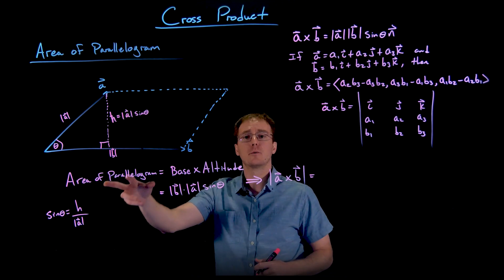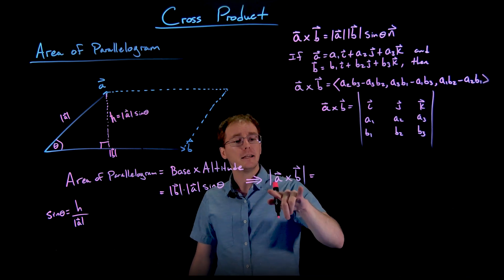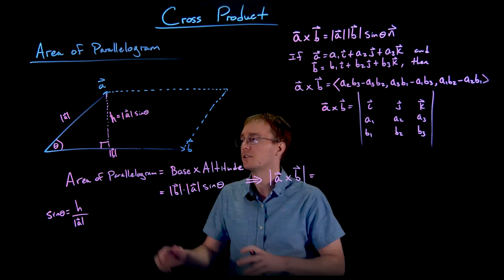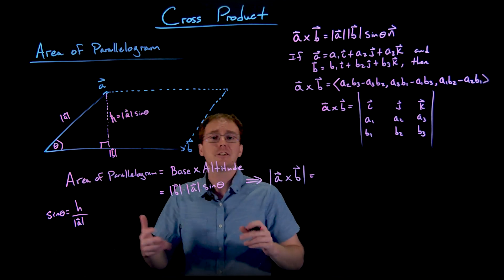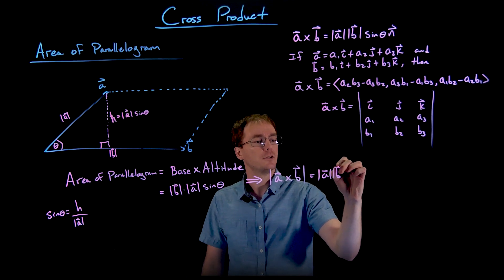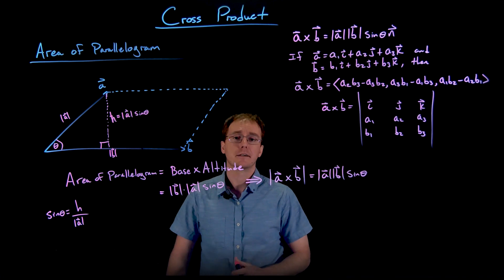So putting all this together we can kind of prove or see that the area of a parallelogram is really just given by the magnitude of the cross product between the two vectors to describe the edges of the parallelogram, or the magnitude of A times the magnitude of B times sine of the angle between the two vectors.